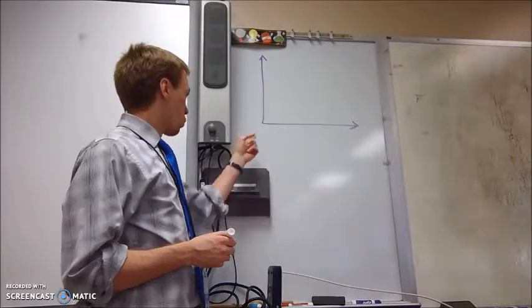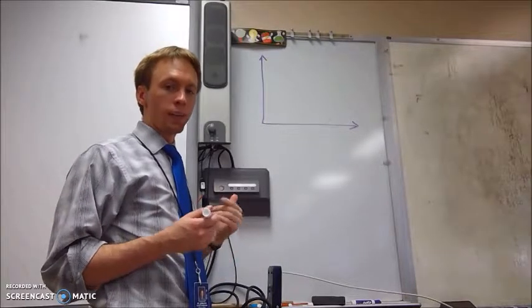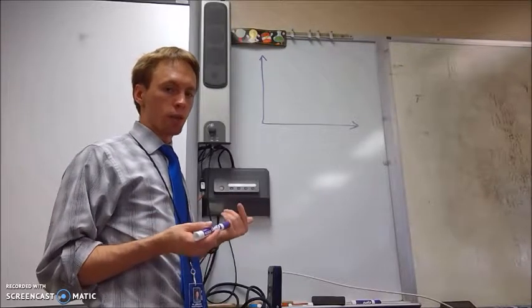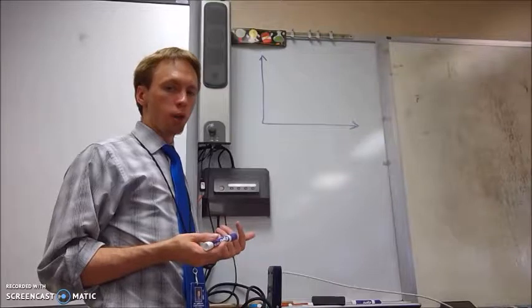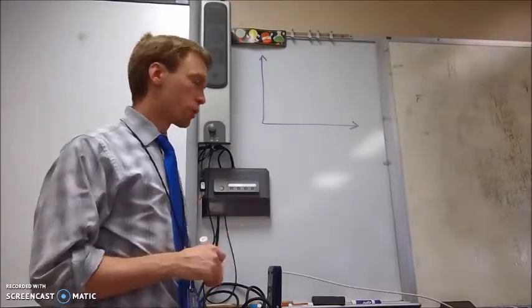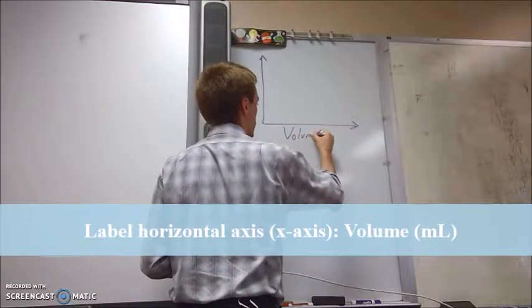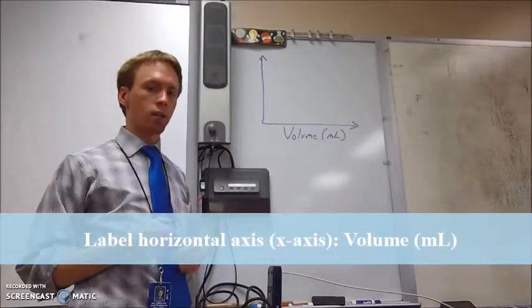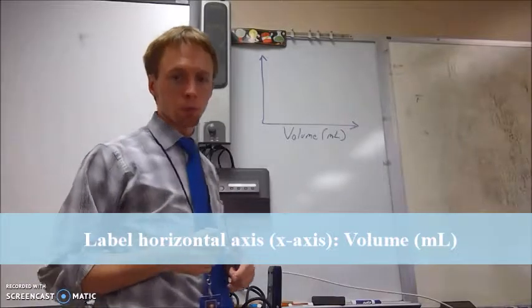On our horizontal axis here, we're going to consider what our independent variable is or what we decided before the experiment to use as our thing that we were changing. In this case, this was the number of bars of each metal and we could say that the difference between all the bars is how much space they took up. So as a result, we're going to put volume on our horizontal axis to act as our independent variable. Remember to include units for all of your results here.